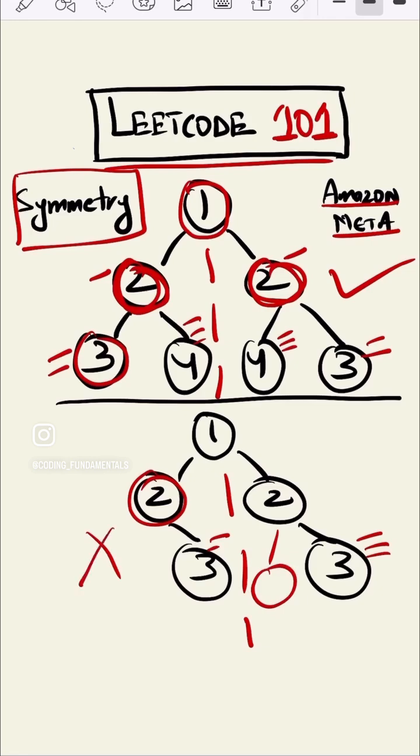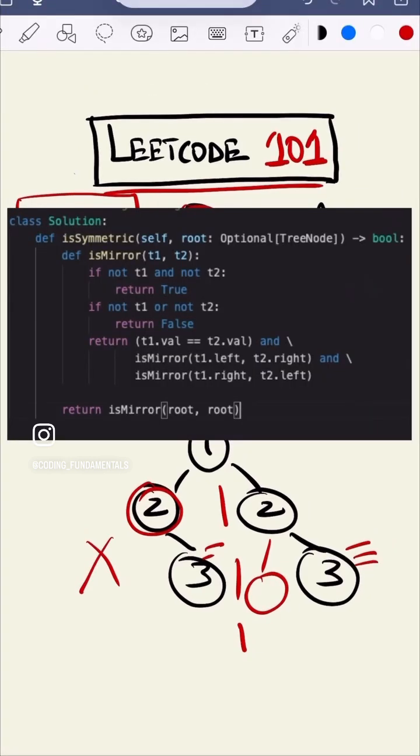Not a symmetrical binary tree. This is our code. As you can see we are checking not of t1 and not of t2.